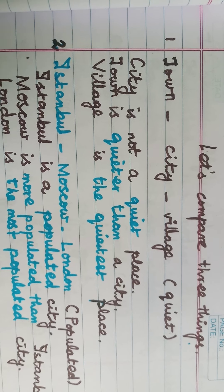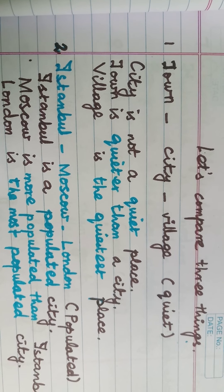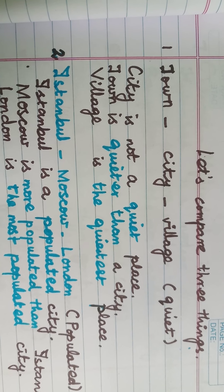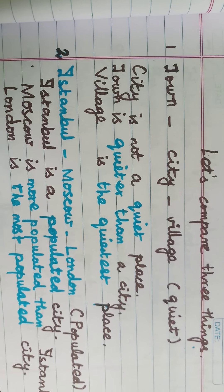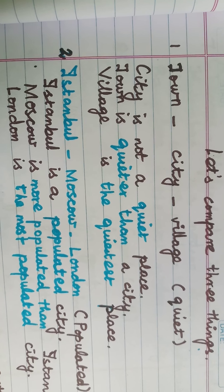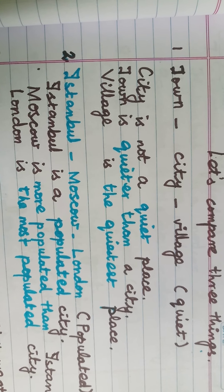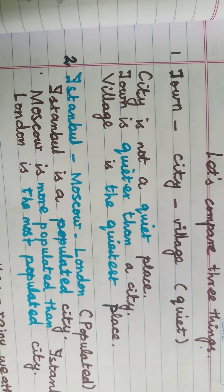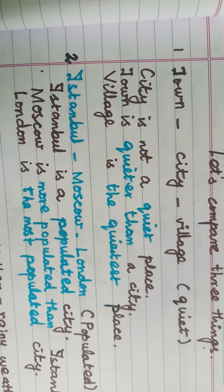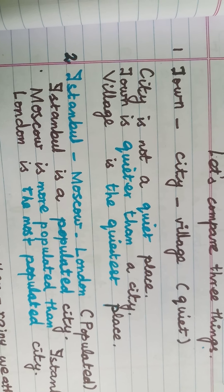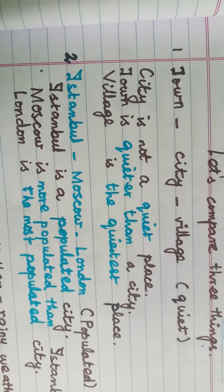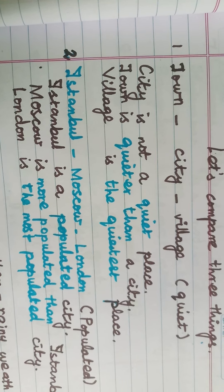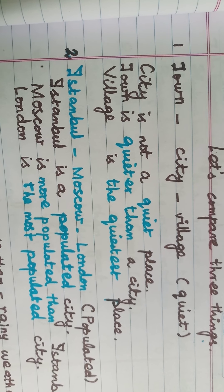Look at the next example: town, city, village. The bracket word is 'quiet.' City is not a quiet place — positive degree. Town is quieter than a city — comparative degree. Village is the quietest place — superlative degree.